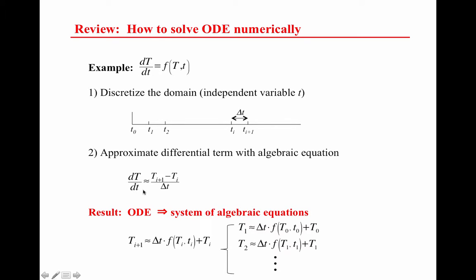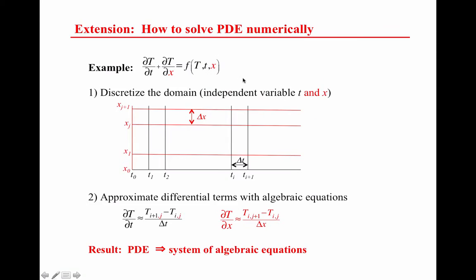When you do this for each grid point, by plugging this approximation into your original derivative, you get essentially a recursive relation which allows you to solve for temperature at any grid point based on the previous grid point. You start with the initial condition, get the temperature at the first grid point, then use that to solve for the second grid point, and so on. That's what's called forward Euler — that's the fancy name for what I just described. Now we're going to extend those ideas to how to solve a PDE numerically.